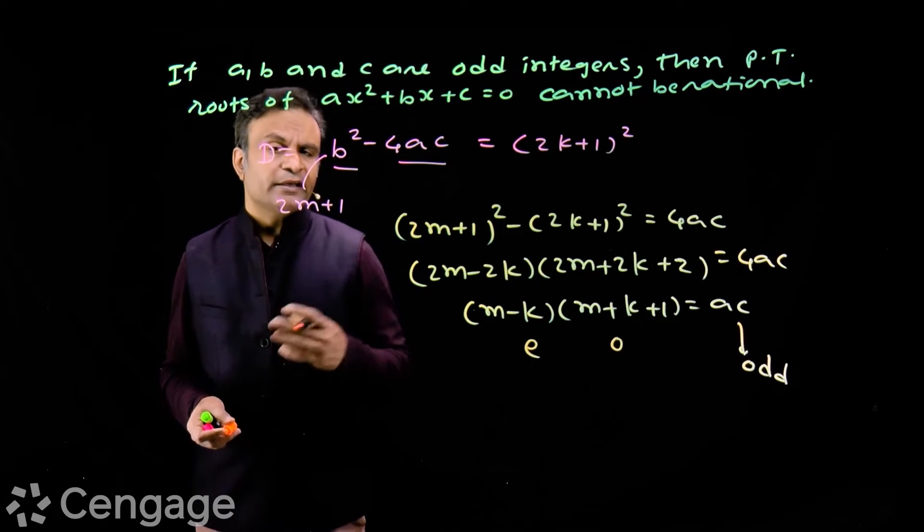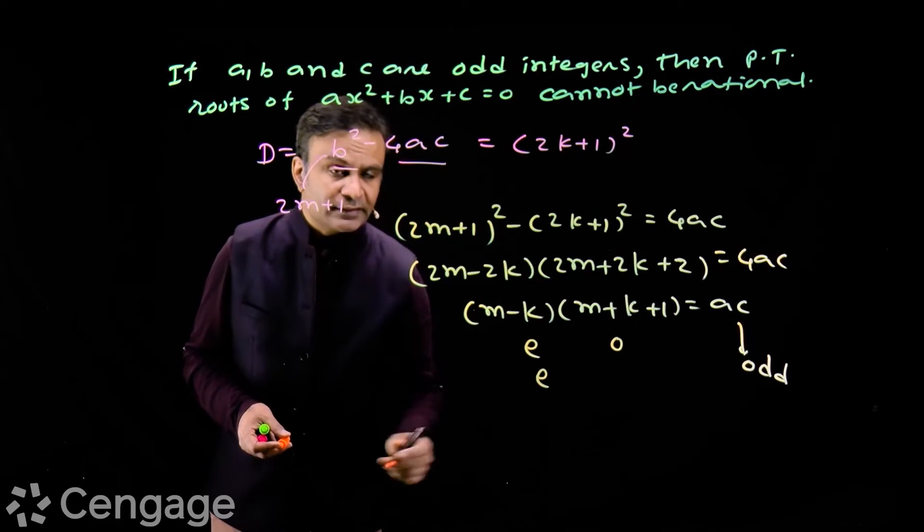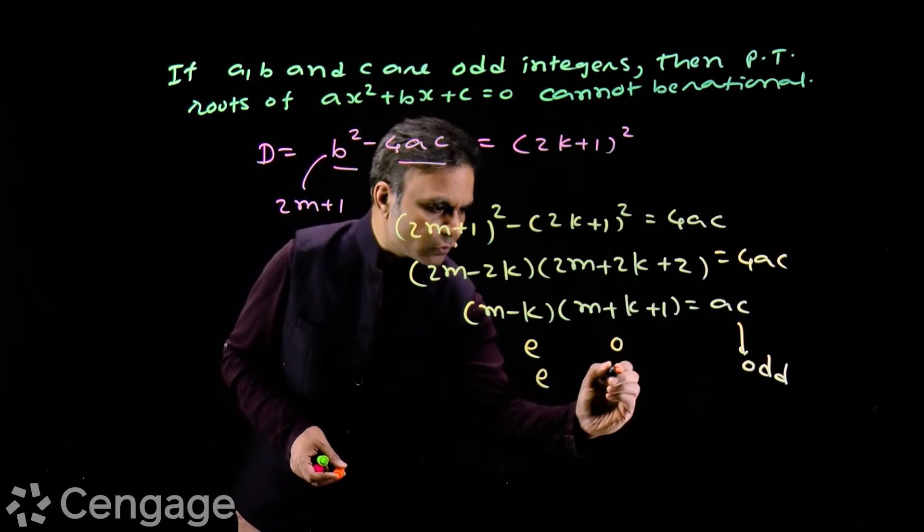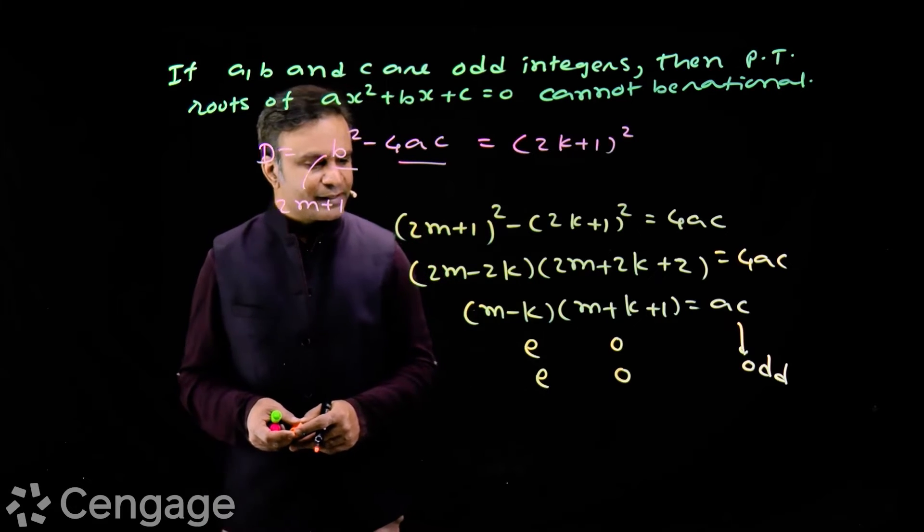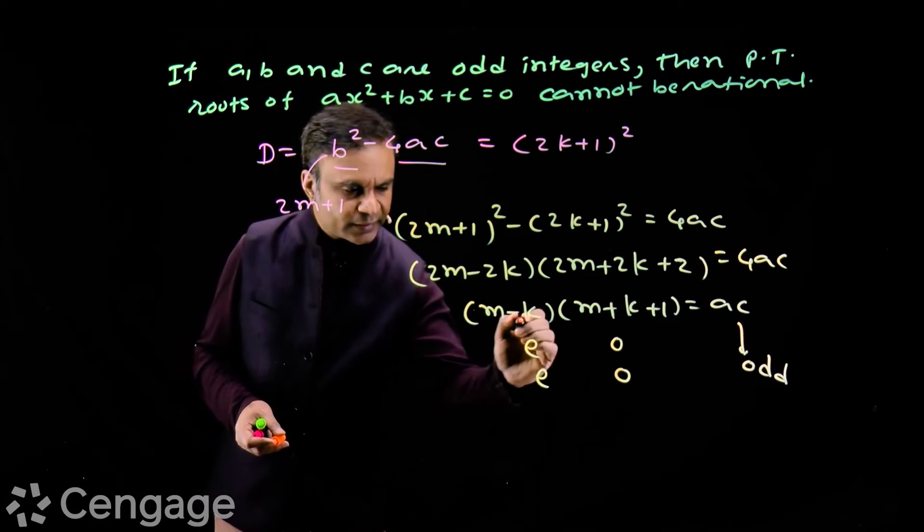If both m and k are odd integers, then we have m-k even integer and this odd integer.